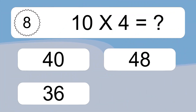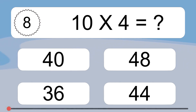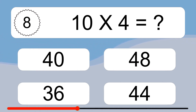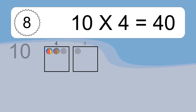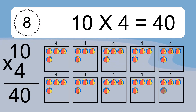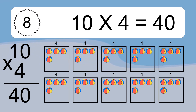10 times 4 equals what? 10 times 4 equals 40. We have 10 boxes, and each box has 4 colorful balls inside. If you count all the balls in all the boxes together, you will have 10 times 4 balls. This equals 40 balls.